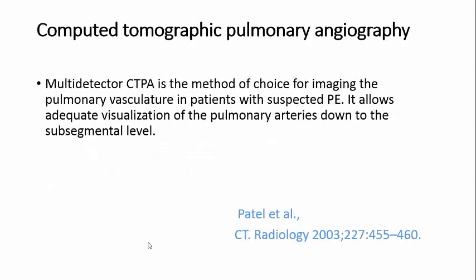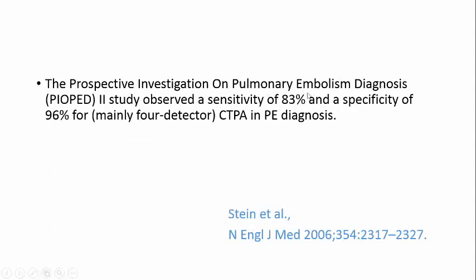CT pulmonary angiography is the gold standard — the method of choice for imaging the vasculature in patients with suspected pulmonary embolism. It allows visualization of pulmonary arteries down to the subsegmental level, but it's not 100% sensitive; it's 83% sensitive and 96% specific, mainly for detected segments. I'm sure many of you have heard from radiology colleagues: 'We cannot exclude pulmonary embolism because some subsegmental areas cannot be reached.' This is because it is only 83% sensitive, yet it remains the gold standard.